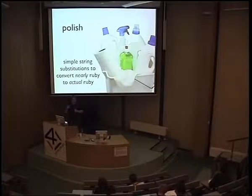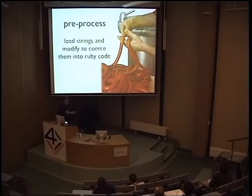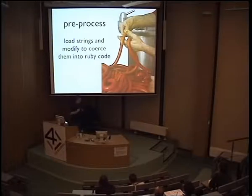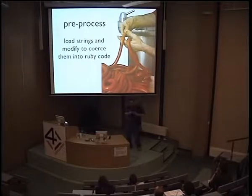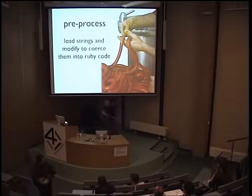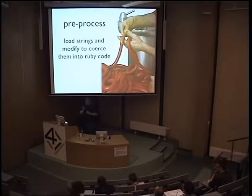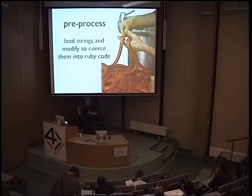That only gets you so far, because when you start dealing with things like dates and other complicated things, you tend to move over to pre-processing, where you load strings and modify them into Ruby code. A common example is to read it in as a string — like the Polish example — but instead of simple string substitutions, you actually look for patterns like dates, times, or days of the week and convert those to actual constants. You're not doing full blown parsing yet, but you are doing much more definite substitutions before passing things off to something like instance_eval.